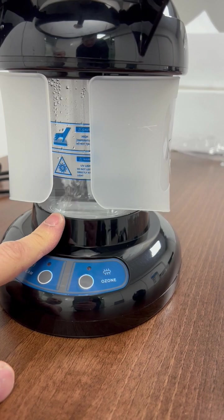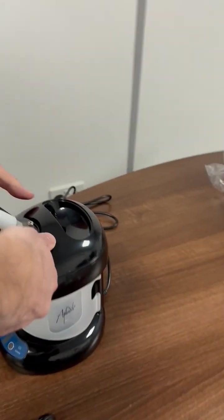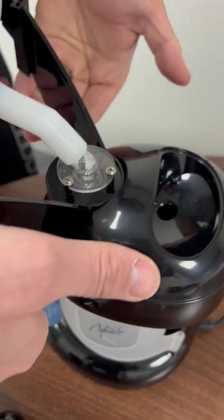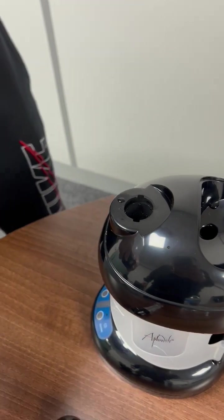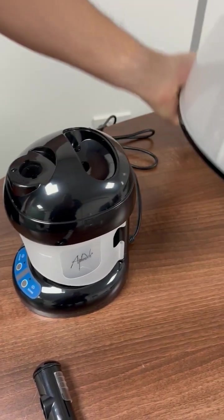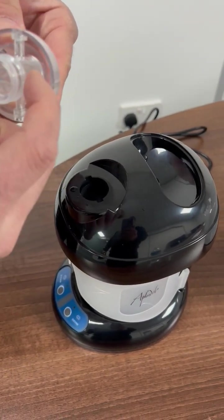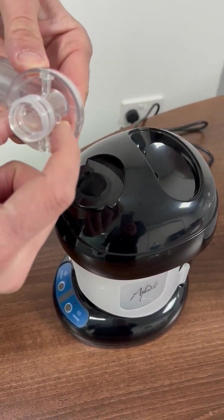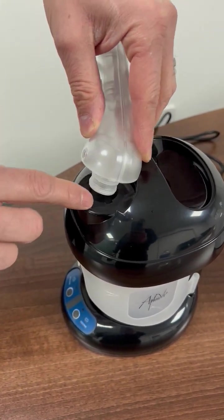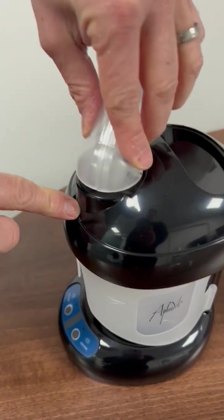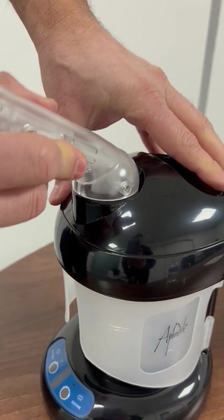I just want to show you quickly how the facial steamer attaches. From here, we put our thumbs, hold the neck of the steamer, and lift it straight off. It comes off nice and easily. Then we've got two points on the neck of the facial steamer which line up with the two points there. You'll feel it sliding and now it's connected and it won't come off.